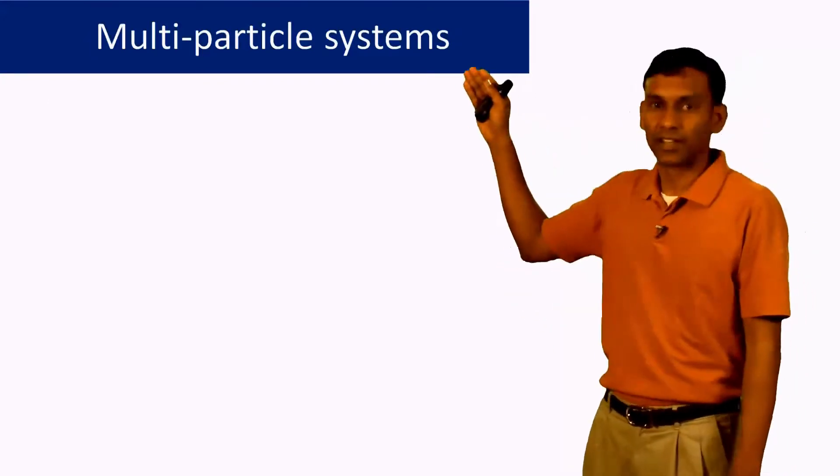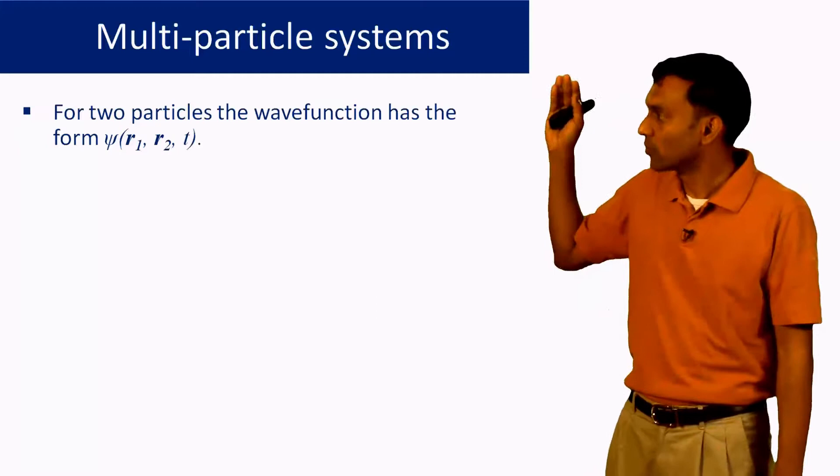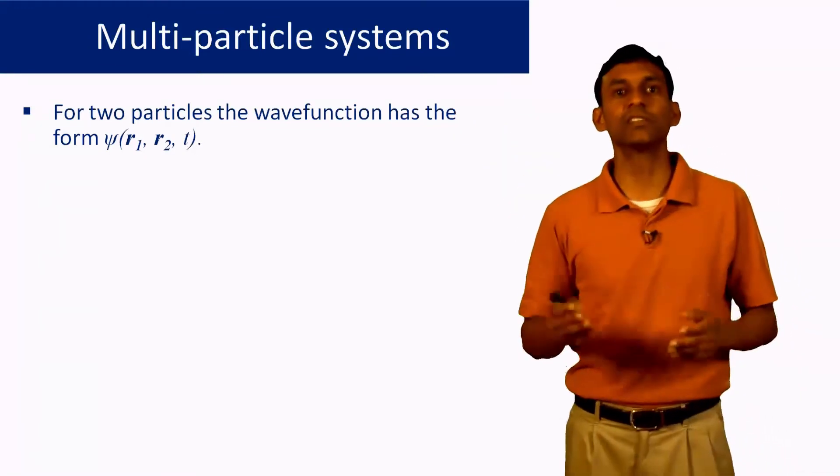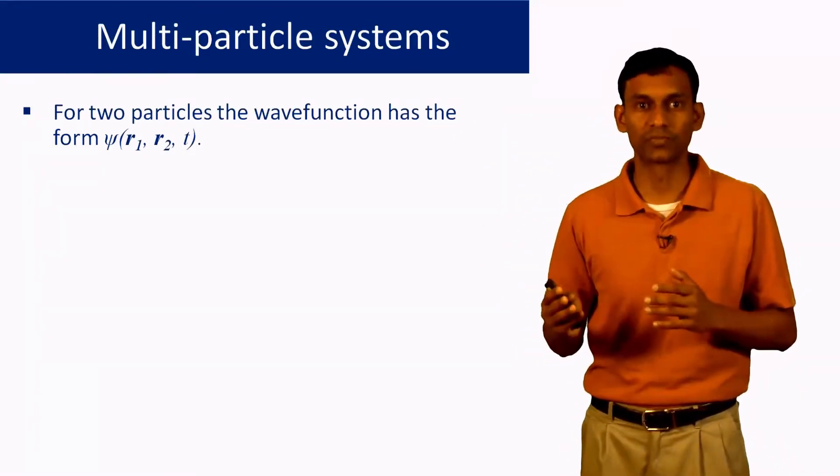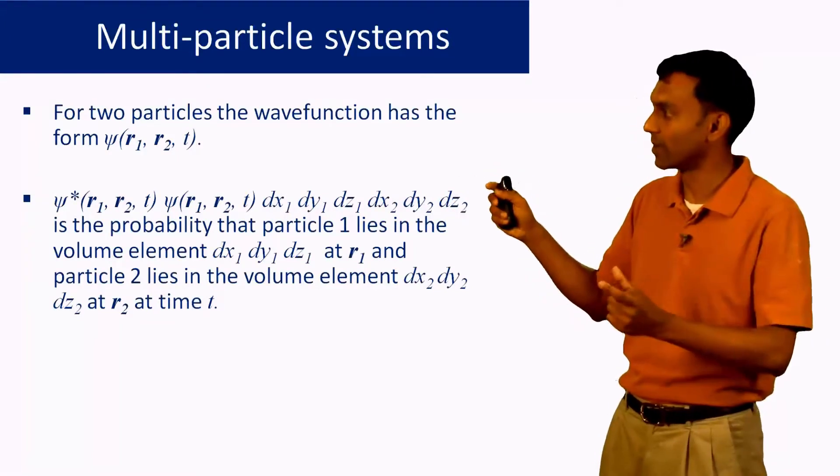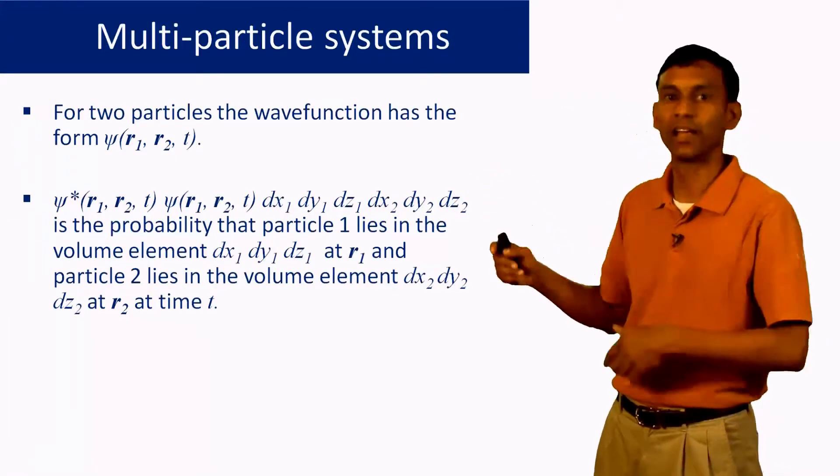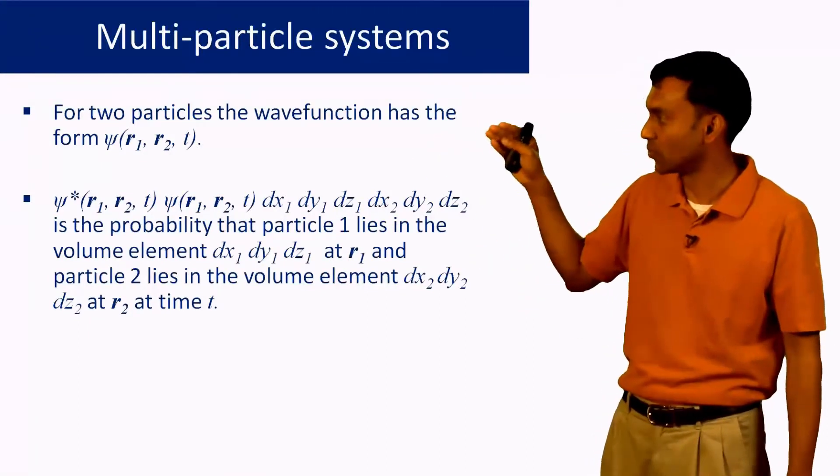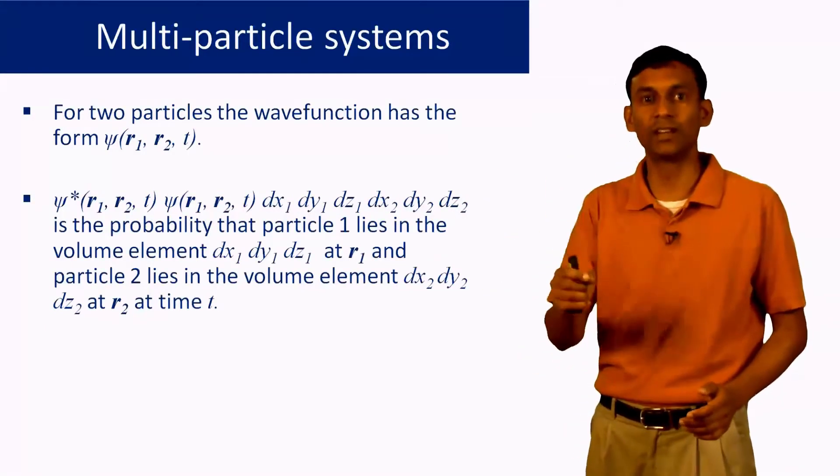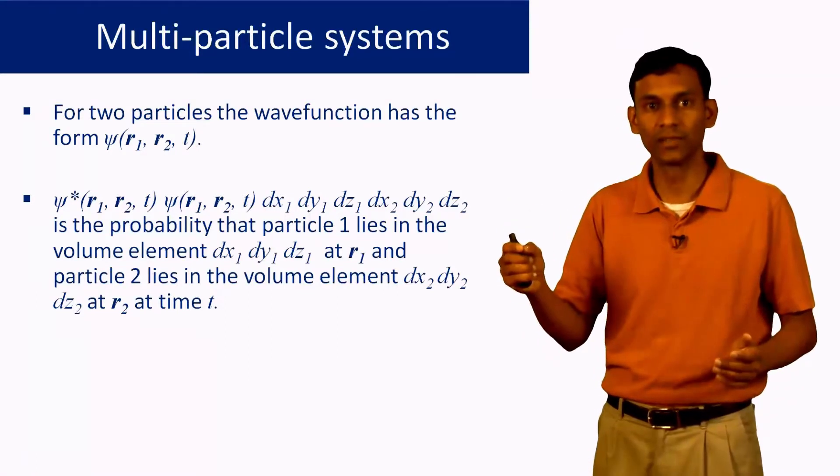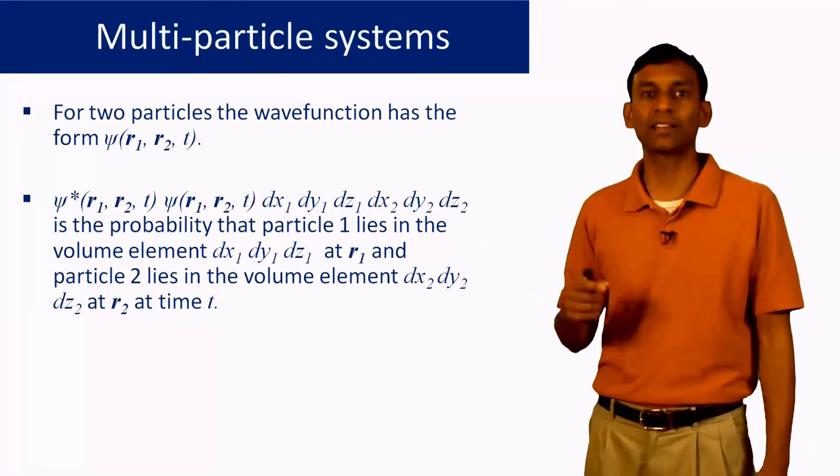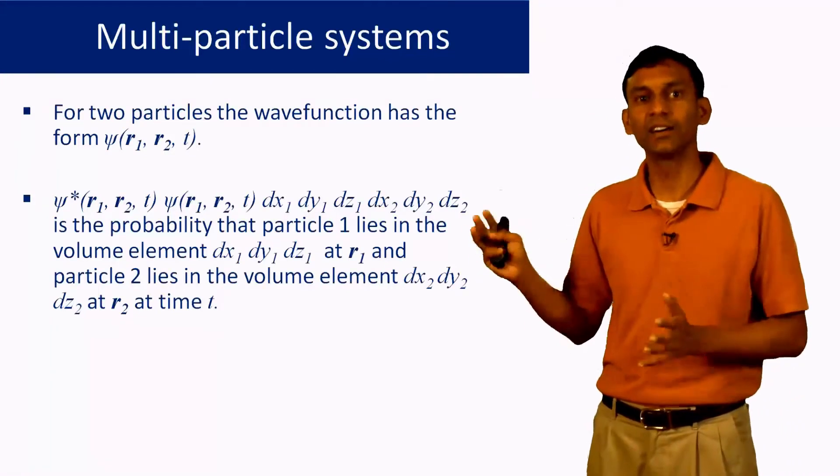Let us look at the wave function for multi-particle systems. For two particles, the wave function simply has the form ψ(R1, R2, t). So now it is a function of two position variables R1 and R2. The probabilistic interpretation is that ψ*ψ multiplied by the volume element dx1 dy1 dz1 at R1 and the volume element dx2 dy2 dz2 at R2 corresponds to the probability that particle 1 lies in this volume element dx1 dy1 dz1 at R1, and at the same time particle 2 lies in the volume element dx2 dy2 dz2 at R2, and all of this at a particular time t.